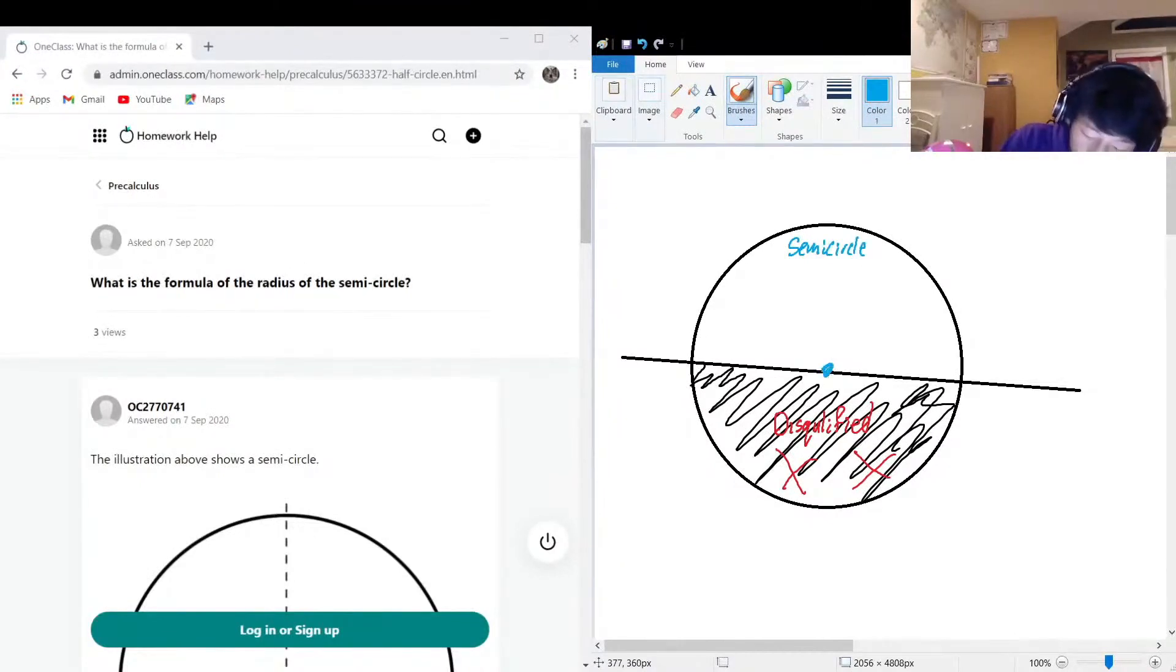The radius of a semicircle, or any circle for that matter, is always going to be the distance between the center. So r is radius—the distance between the center and one edge of the circle, any edge or side of the circle.